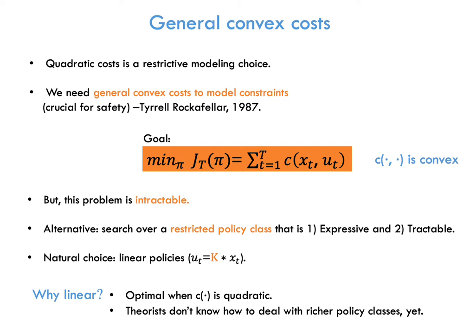A natural choice is the class of linear policies. The reason is that linear policies are expressive, since they are optimal when the cost is quadratic. Furthermore, the theory community does not currently know how to deal with non-linear policy classes, and this is a very good direction for future work.